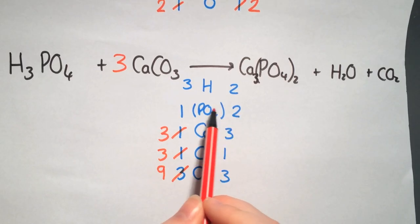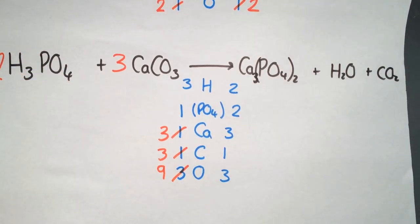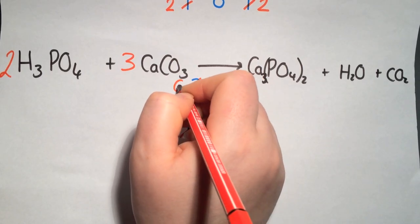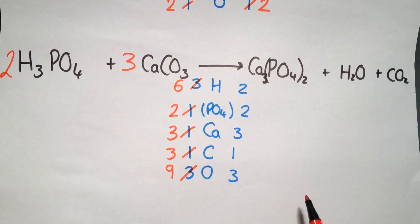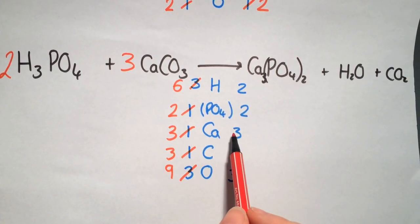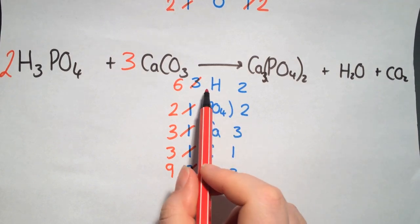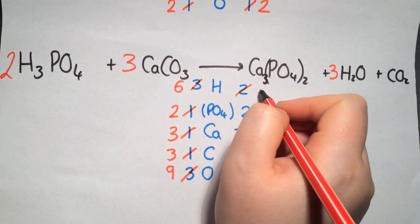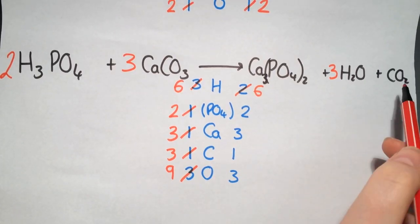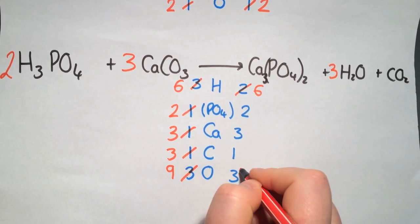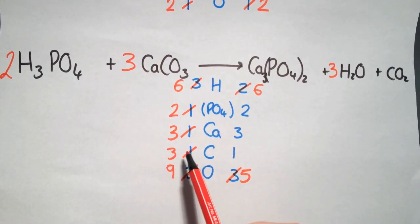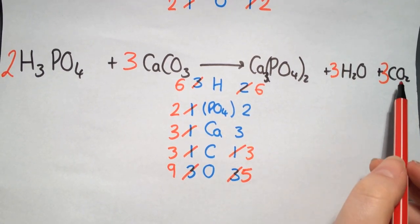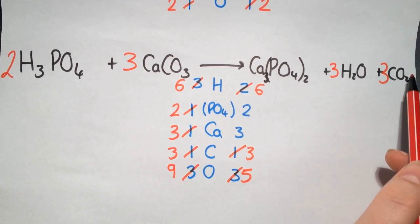So we put a large two in front of the H₃PO₄, which multiplies the PO₄ by two and also multiplies the hydrogens by two giving six. Now the PO₄ and calciums are balanced, so we look at water and carbon dioxide. We have six hydrogens and only two on this side, so putting a three in front of the water gives us six and also multiplies our oxygens — giving five oxygens total. Then for the carbons: three on this side and only one on the other, so a large three in front of the carbon dioxide multiplies the carbons by three and the oxygens, giving one two three four five six seven eight nine oxygens.